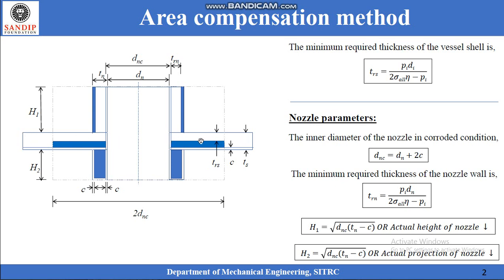This horizontal rectangle is the shell of the vessel. TS is the actual thickness — the final rounded-off thickness of the shell. C is the corrosion allowance, whereas TRS is the required thickness of the shell based on strength calculations. Its formula is given as TRS = P·Di / (2·σ_allowable·η − P). This is the same formula for thickness of the shell of a pressure vessel without corrosion allowance. The blue area visible here is the excess area arising from rounding off the thickness to the next integer value, and such excess area is available in the shell as well as in the nozzle.